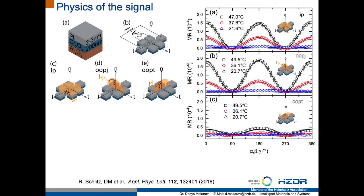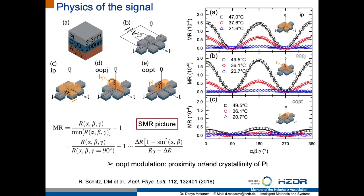In order to understand the physics of the measured signal, we collaborate with the group of Sebastian Gönnenwein at the University of Constance. We pattern our samples in Hall bar geometries, which allows us to measure not only the transversal resistance but also magnetoresistance when the sample is exposed to magnetic fields rotated in three orthogonal planes. By analyzing the angular dependence of magnetoresistance, we can identify clear fingerprints of spin Hall magnetoresistance. Our current understanding is that the readout signal in both transversal and longitudinal channels, below and above the Néel temperature of chromium oxide, is related to transversal and longitudinal spin Hall magnetoresistance in the platinum interfaced with the chromium oxide magneto-electric insulator.